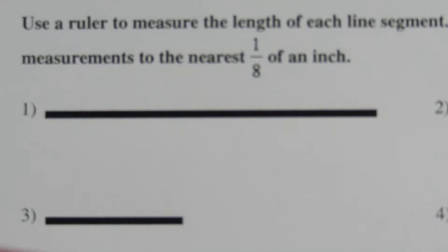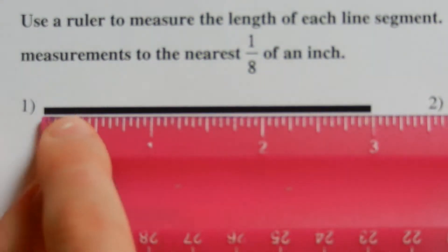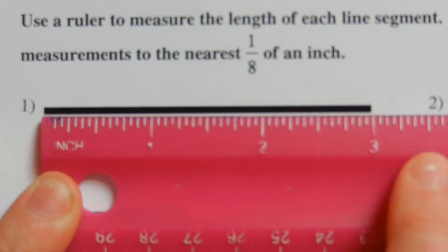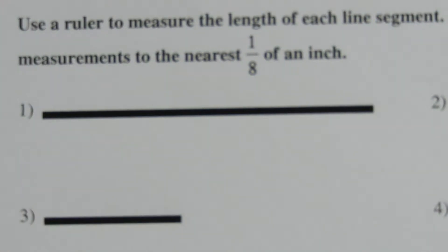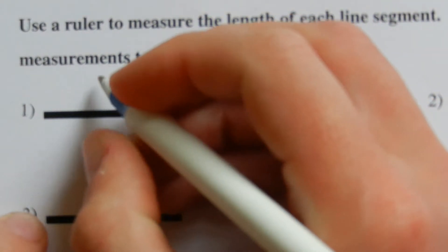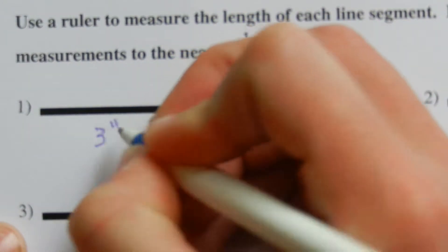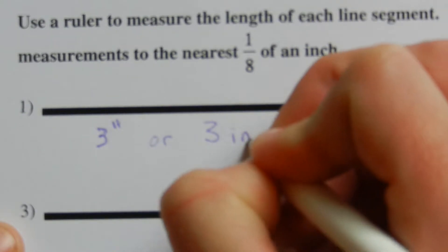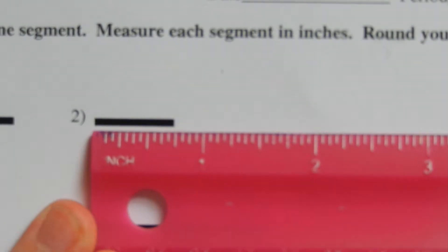Let's look at number one. We want to line our ruler up on the edge of the line and count over using the inches side: one, two, three — so we're exactly at three inches. For number one, our answer is three inches. You can either write three and then the two tick marks which represent inches, or you can write three IN for inches — either is correct.